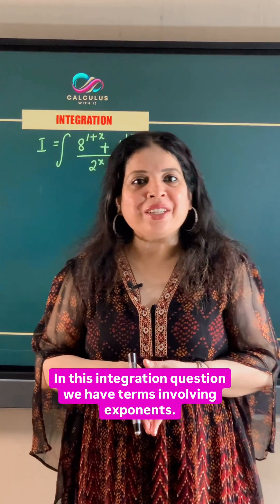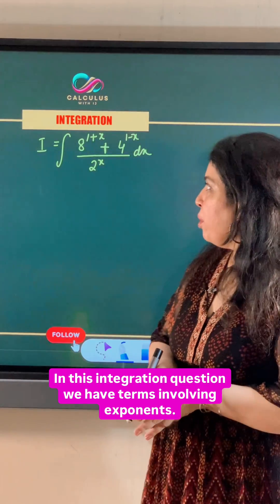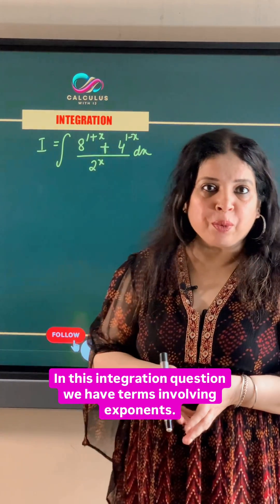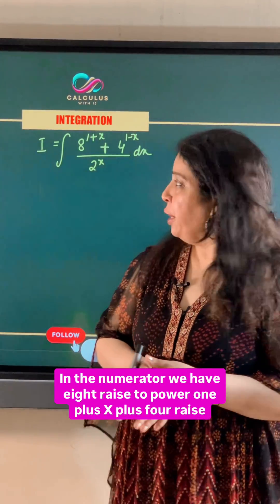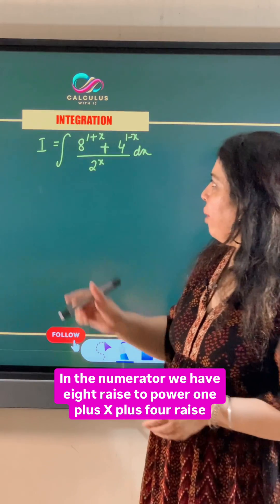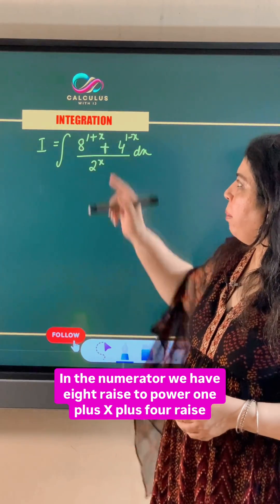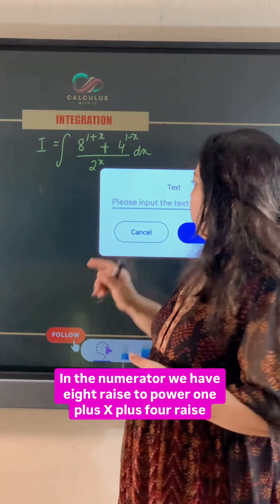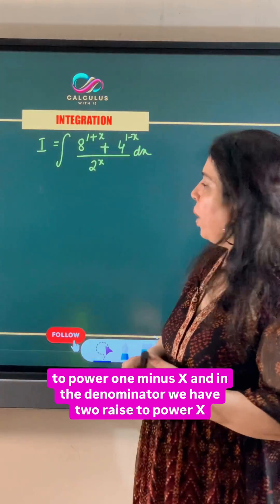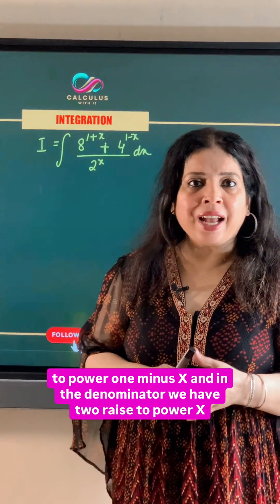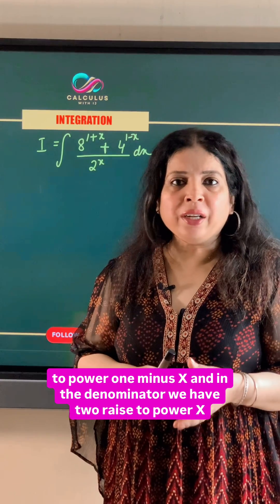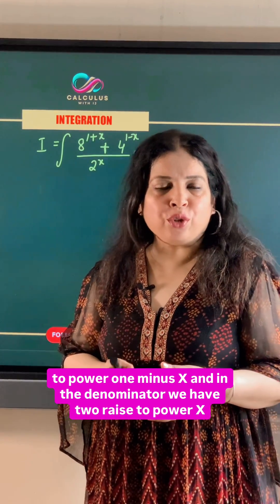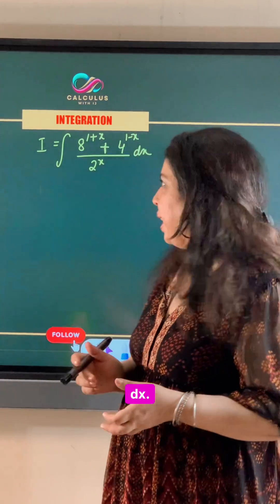In this integration question, we have terms involving exponents. In the numerator, we have 8 raised to power 1 plus x, plus 4 raised to power 1 minus x. And in the denominator, we have 2 raised to power x dx.